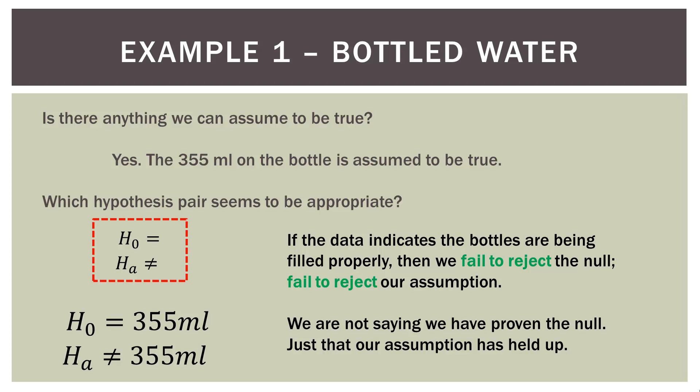If the data indicates the bottles are being filled properly, then we fail to reject the null hypothesis — we fail to reject our assumption. If it comes back that it's actually 355, we cannot reject our null hypothesis. We're not saying we have proven the null, just that our assumption has held up. Think of it as an assumption we either reject or fail to reject.